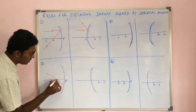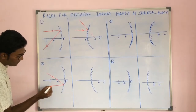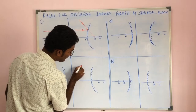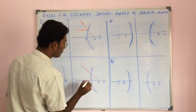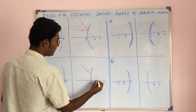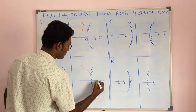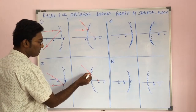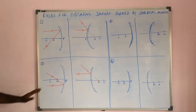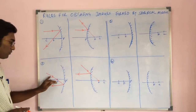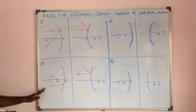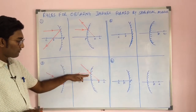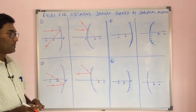The second rule states that a light ray passing through the focus after reflection travels parallel to the principal axis. In the case of a concave mirror, a light ray incident through the focus travels parallel to the principal axis after reflection. Similarly, for a convex mirror, a light ray directed towards the focus after reflection also travels parallel to the principal axis.